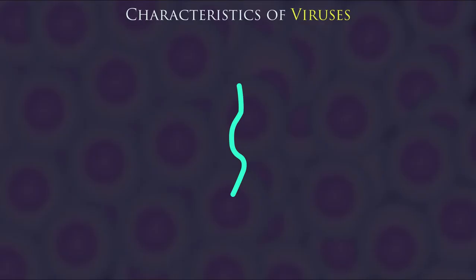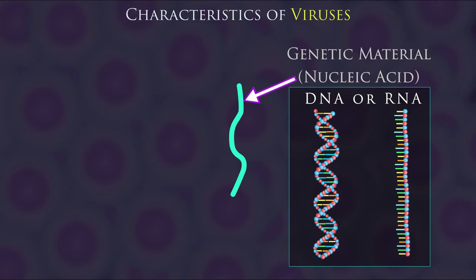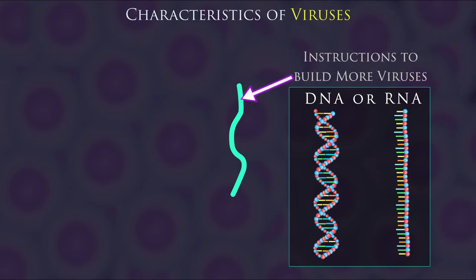All viruses have some characteristics in common. They always have genetic material in the form of a nucleic acid, either DNA or RNA. This is the instructions for how to build more viruses.